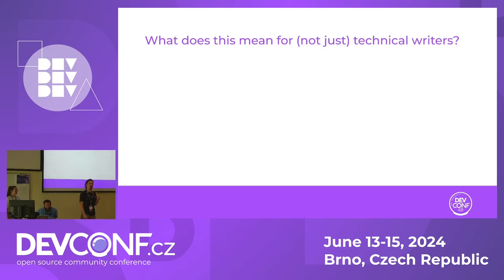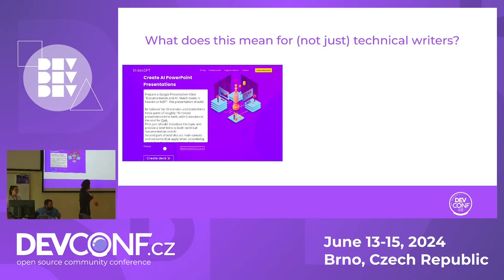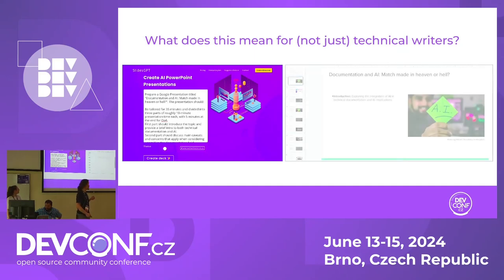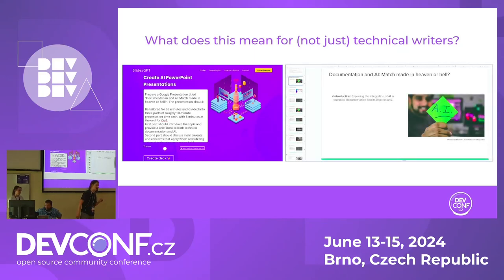How do I do it? Well, for instance, I can use AI to create a presentation on AI and documentation. As it turns out, there is a GPT generator for slide decks — you just put in a prompt, and boom, here is your presentation. But don't worry, this is not the slide deck we used. Mostly.